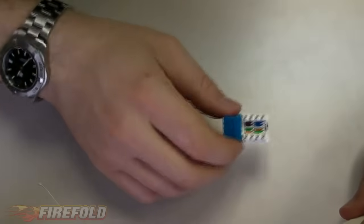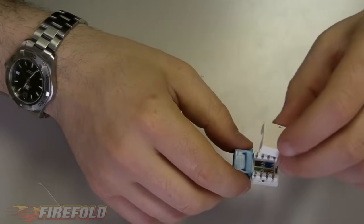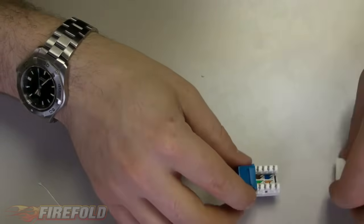When you open up your package, you'll notice you have two separate things here. You have the actual keystone jack itself, and you have a dust cover, which goes on top of the keystone jack, like so.